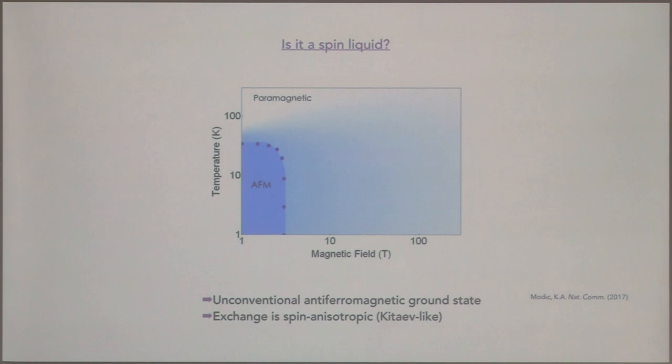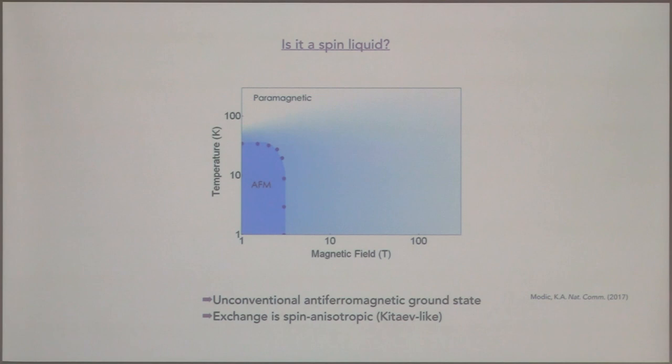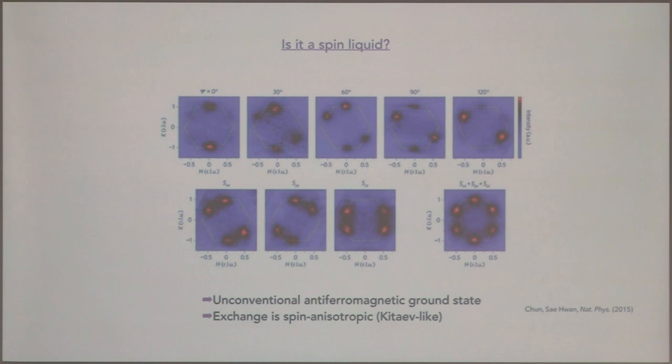The second thing is that this antiferromagnetic phase is very anisotropic. For example, if you apply magnetic fields in different directions in the crystal, that antiferromagnetic phase extends — we think — up to probably 100 Tesla for some crystal field orientations. Neither of these things are part of Kitaev's original model.